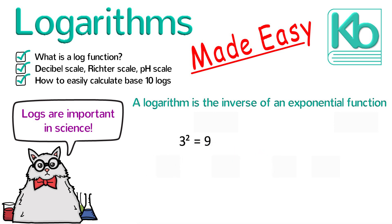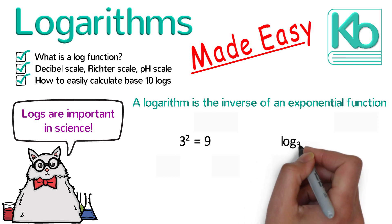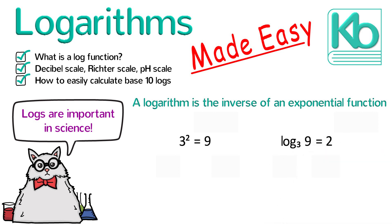3 squared equals 9, right? Well, we can rewrite that same equation in terms of logs this way. Log base 3 of 9 equals 2. Notice that the numbers in both of those equations are the same. They're just arranged differently. For the log equation, the 2 and the 9 have switched places.